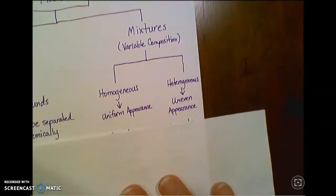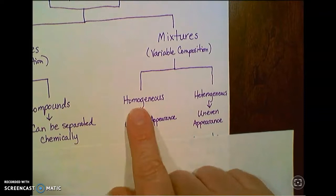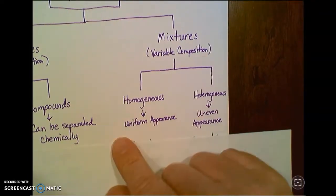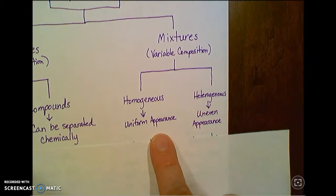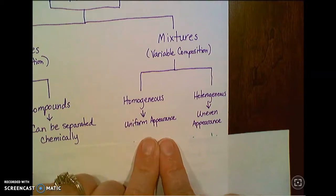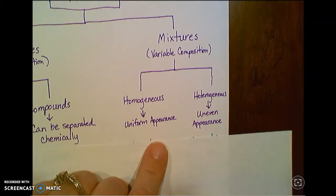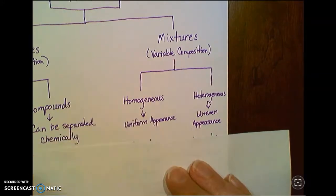Mixtures, on the other hand, can have variable composition. If I'm just throwing things together into a mixture, let's say salt and water, I might have a little bit of salt, a whole lot of salt, or a medium amount of salt. But it's still a salt-water mixture. So that's what I mean by variable composition.